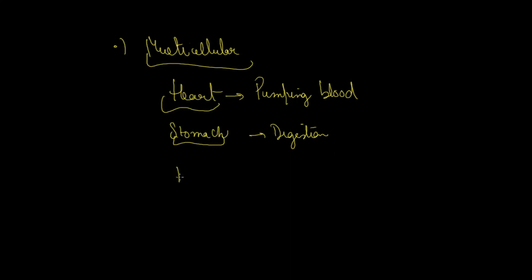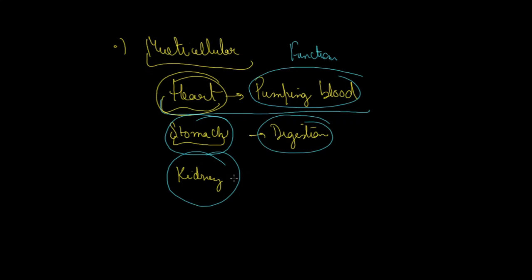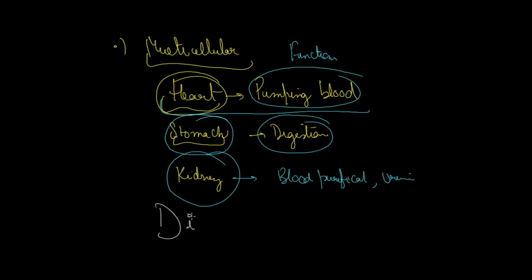Imagine you also have a kidney. Our whole body is made from cells, so the heart is made of cells, the stomach is made of cells, and the kidney is made of cells. The heart does pumping of blood, the stomach does digestion, and the kidney does blood purification.